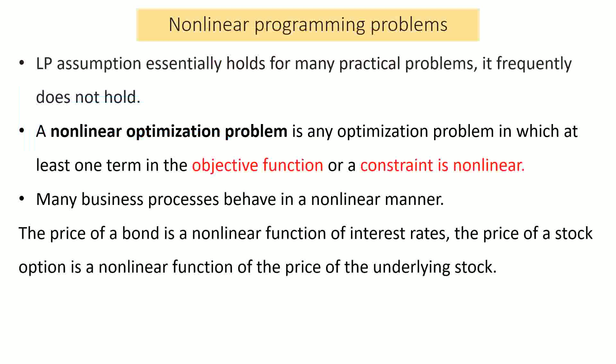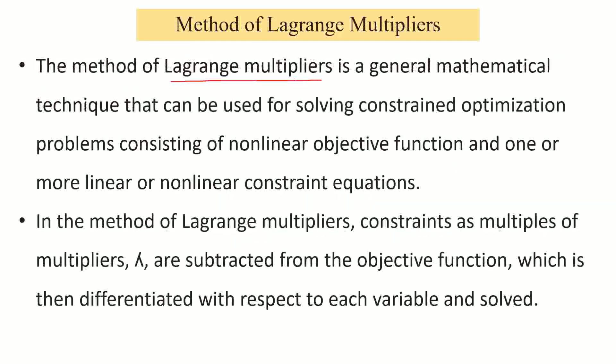As we remember from lesson 20, in reality there are occasions where the relationship in the objective function and in the constraint may not be linear. In that case, we use differentiation or the Lagrange multiplier to find the optimum solution. The Lagrange multiplier method is a general mathematical technique used for solving constrained optimization problems — problems having constraints consisting of a linear or non-linear objective function and one or more linear or non-linear constraints.